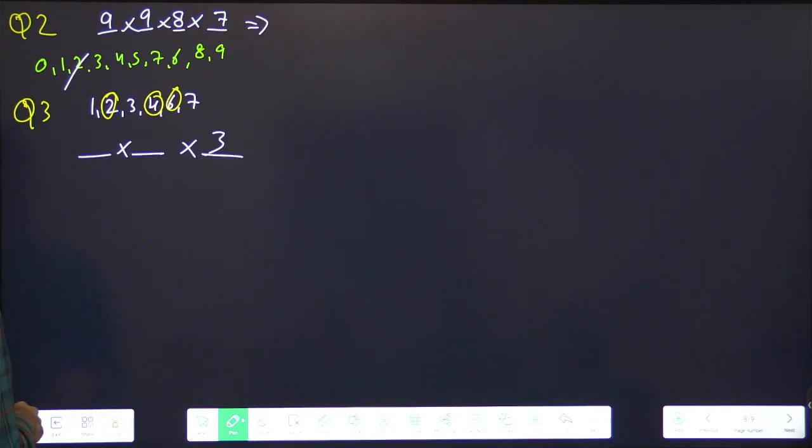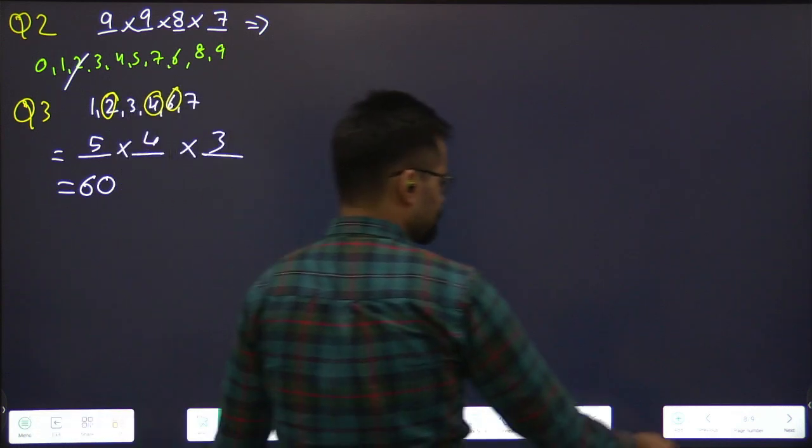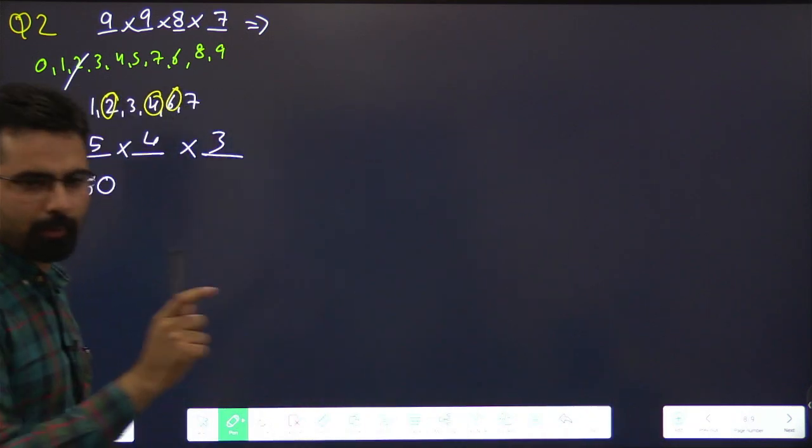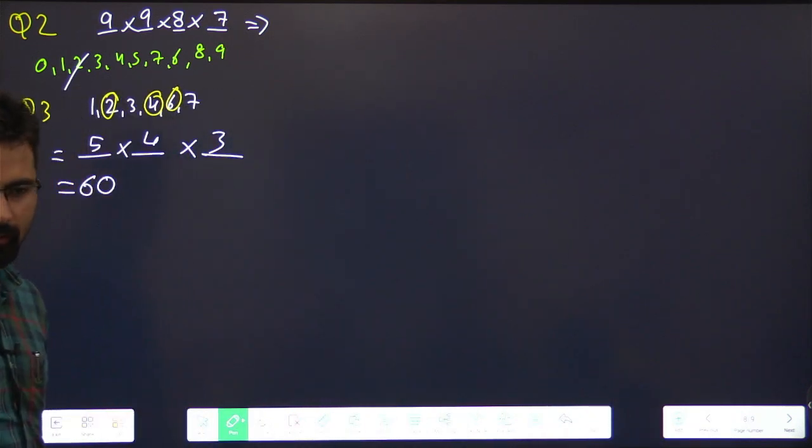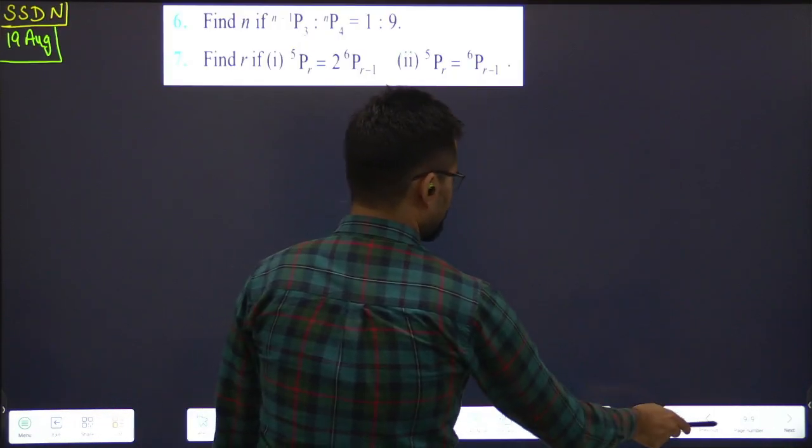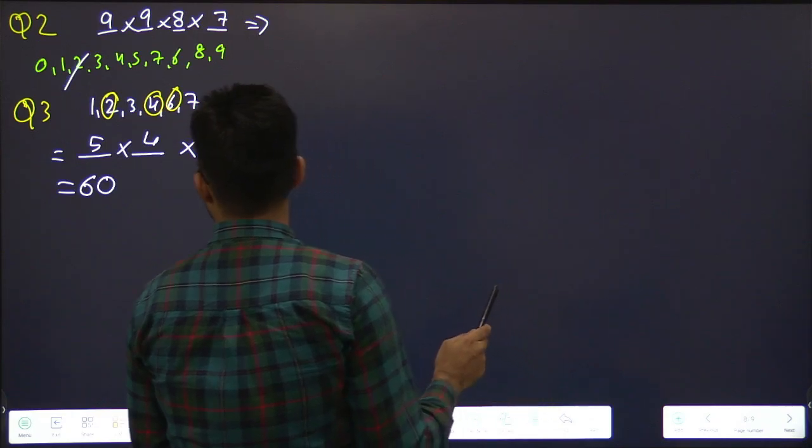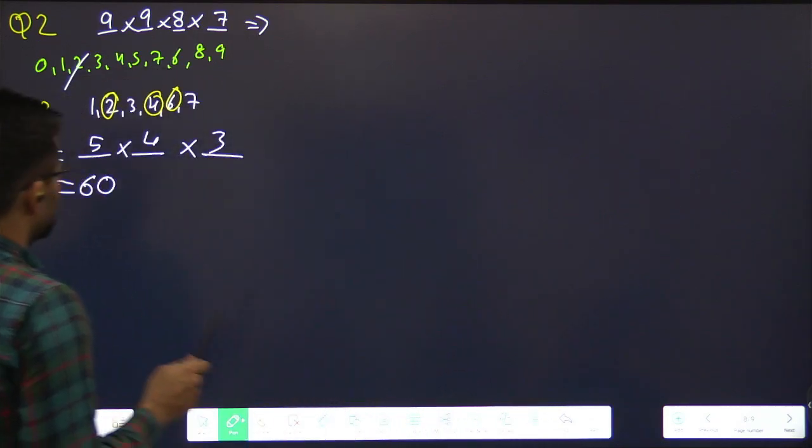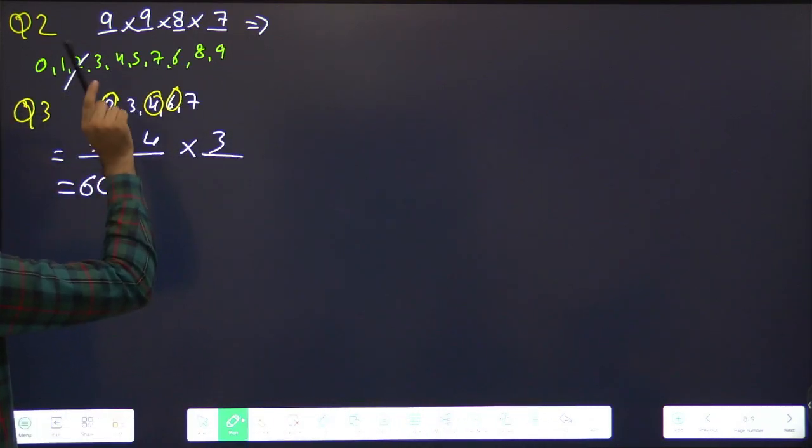So last digit three options. Next digit? Five. Five. Next digit? Four. So sixty total. Clear? Okay. Now I'll do it with permutation also. First let me make sure the basic concept is clear. I'll also do it with permutation.